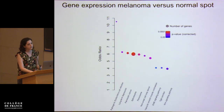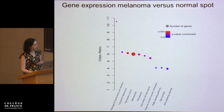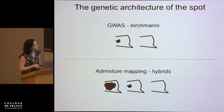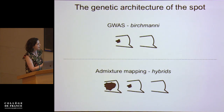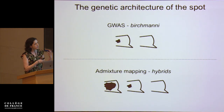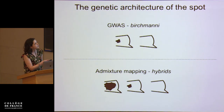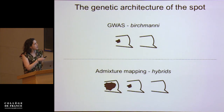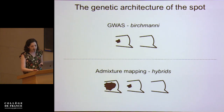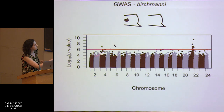We were then interested in understanding whether this is a true hybrid incompatibility and whether we could map its basis. We took a couple of different approaches to identify the precise regions underlying this trait in birchmanii hybrids. Our first approach was to identify the genetic basis of the spot, because individuals without a spot never develop melanoma. We used a case-control GWAS with about 200 individuals with the spot and 200 without, and scanned the genome for allele frequency differences between these two morphs. Our strongest signal by far is on chromosome 21.